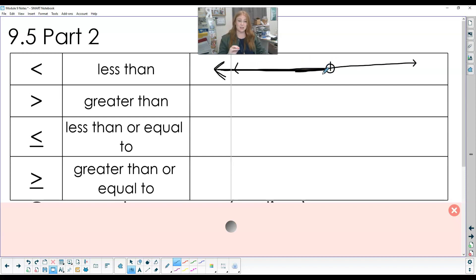So it's less than, it is not including that number. It is open. It does not include that number on the dot. It has to be smaller than that.